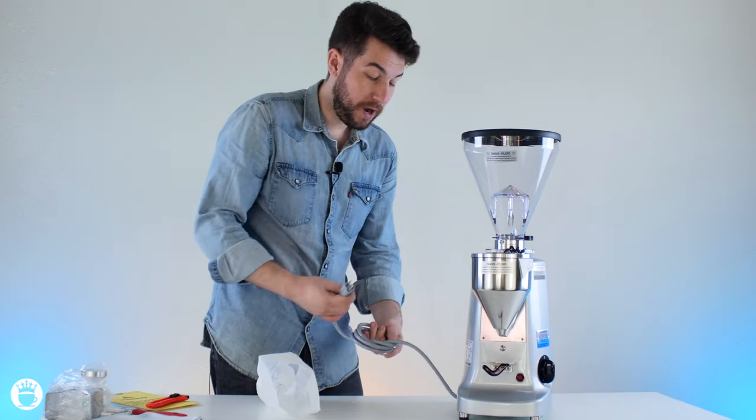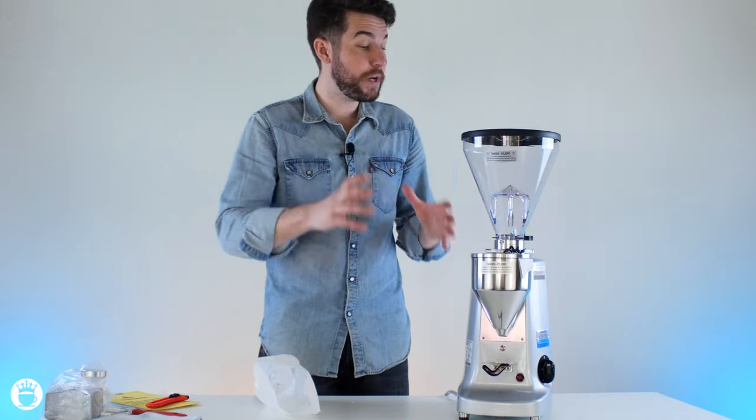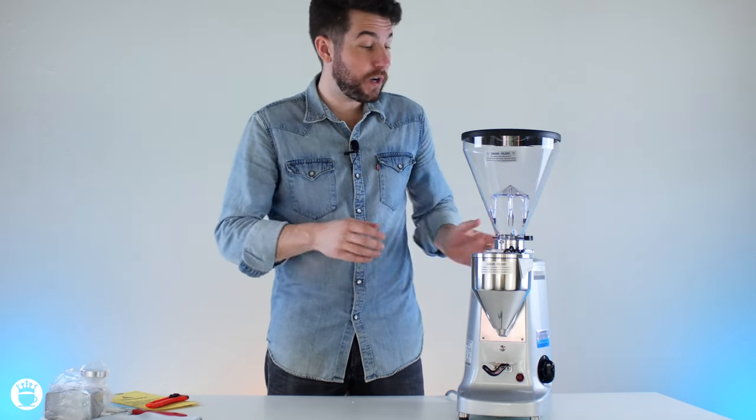Your standard three-prong power cord here, and this does run a 350 watt motor, so a nice powerful motor powers your 64 millimeter flat steel burrs, which run about 1600 RPMs.